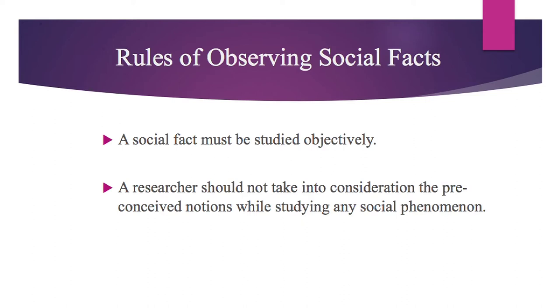Now let us try to discuss the rules of explaining social facts. While explaining social facts, a researcher must explain the causes or the factors that led to the evolution of a particular social phenomenon. He or she must also take into consideration the function of that social fact in the present society. For example, if a researcher is trying to understand marriage practices, he or she must first explain the causes that led to the emergence of marriage practices, and also the function of marriage in a particular society.